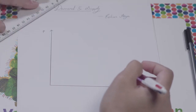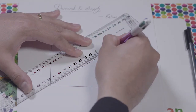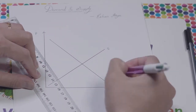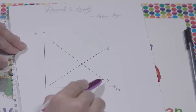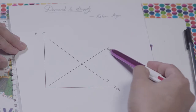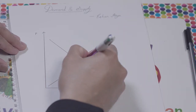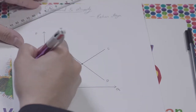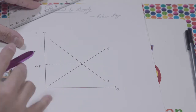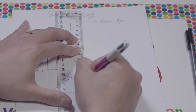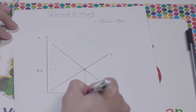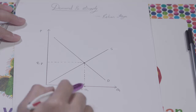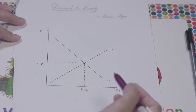Let's draw a regular demand and supply diagram. Here is your price axis and here is your quantity axis. This is your downward sloping demand curve and your upward sloping supply curve. The point where they meet is the point of equilibrium — that's where the market clears. That gives you the equilibrium price and equilibrium quantity, EP and EQ. At this particular price and quantity, the market will clear, and quantity demanded will meet quantity supplied.